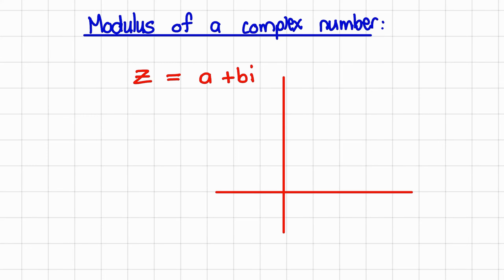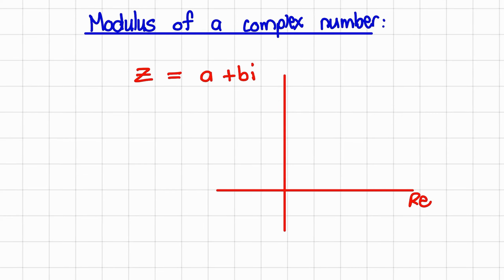In the previous video, we learned that we can plot the complex number on the complex plane, where the x-axis is replaced by the real value, and the y-axis is replaced by the imaginary value. So the real value would be a, and the imaginary value would be represented by b.